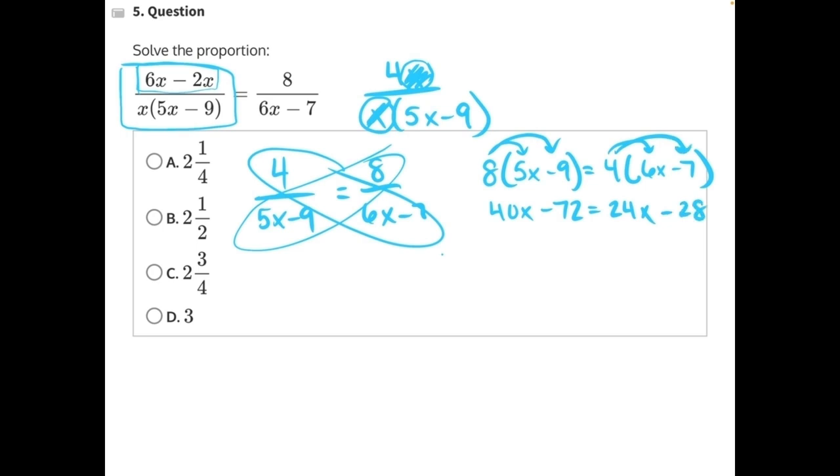And now we can do opposite operations to combine like terms and try to isolate our variable. Let's start by adding 72 to both sides, since 72 is being subtracted from 40x. These 72s will cancel.